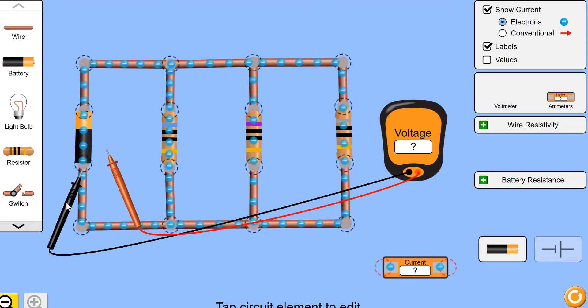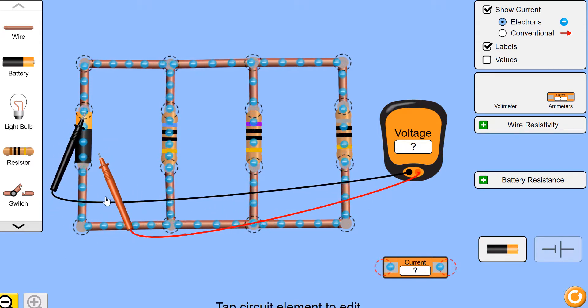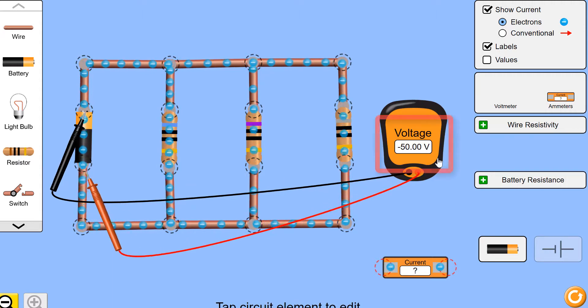If I switch the leads, it tells me the bottom is 50 volts lower than the top. That's what the minus sign means.